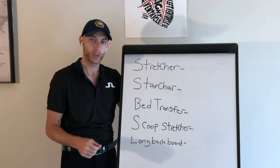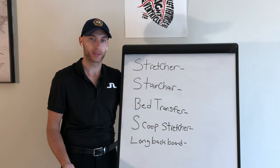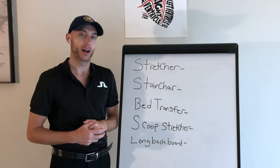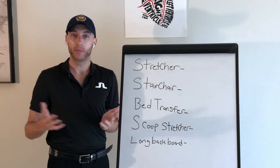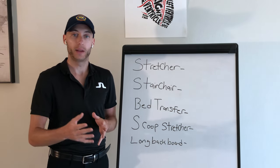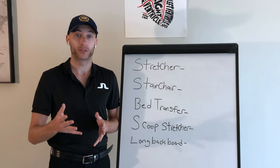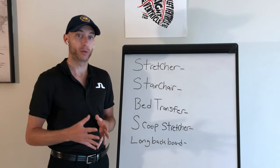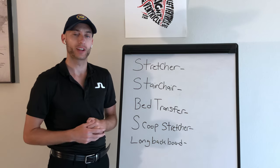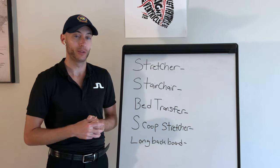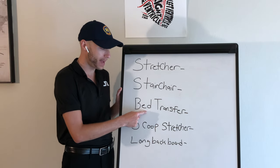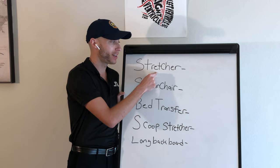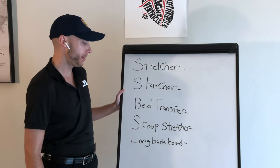The stair chair is utilized when the patient is on a different floor. If there's no elevator, or the elevator is broken, you have to use stairs. For example, if you're on the second story of a home where the bedroom is most commonly located, that patient may have to go from the bed to the stair chair, then down to ground level outside the home, then to the stretcher, and then into the ambulance. That's how you do it.